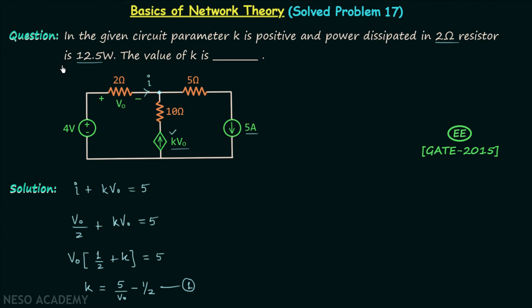And to calculate v0, we will use the information that power dissipated in 2 ohm resistor is equal to 12.5 watts. The power dissipated in the 2 ohm resistor is equal to 12.5 watts.